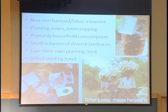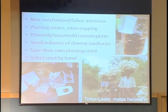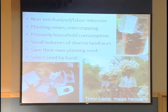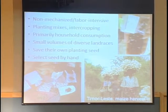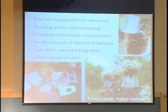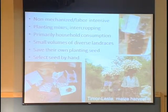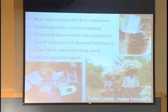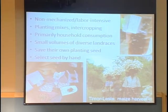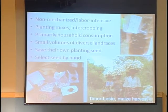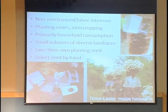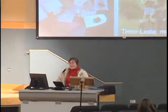Almost without exception, people use planting mixes and intercropping, and they're producing primarily for household consumption. Because of these conditions, they produce small volumes of diverse landraces — varieties of crops not worked on by professional plant breeding programs, but produced and saved on farm. They save their own planting seed and select seed by hand. These practices enable people to cultivate and eat an extremely wide variety of crops.